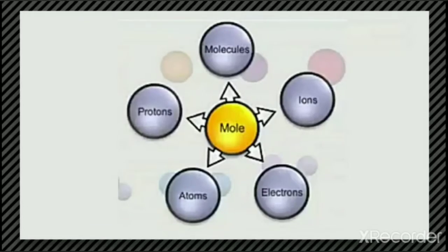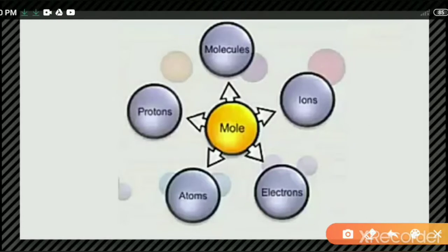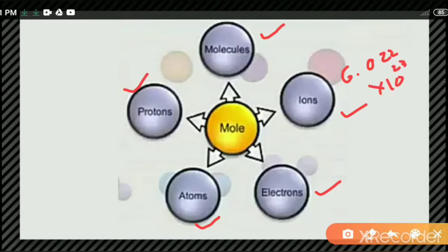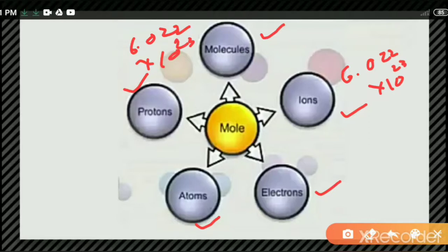One mole of any substance — whether ions, electrons, atoms, protons, or molecules — is equal to 6.022 × 10²³ number of those entities. So if I say one mole of ions, that is 6.022 × 10²³ ions. One mole of molecules means 6.022 × 10²³ molecules. One mole of atoms means 6.022 × 10²³ atoms. The entities can be an atom, an ion, a proton, or an electron.